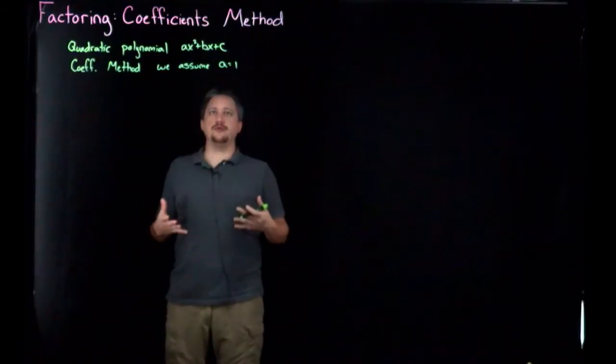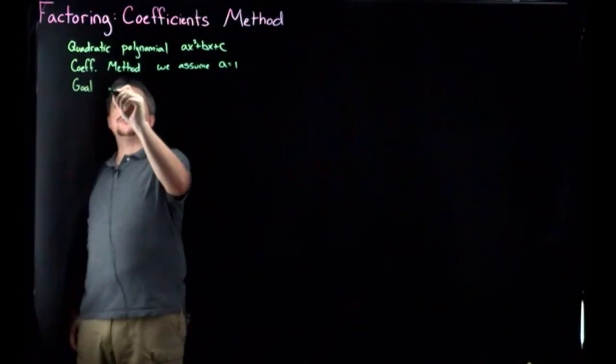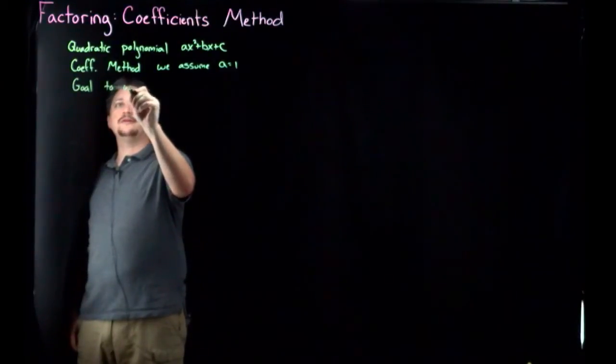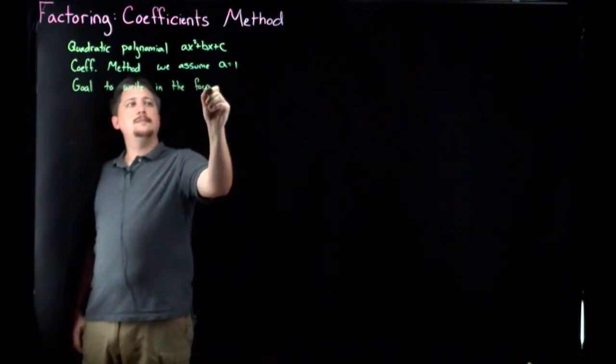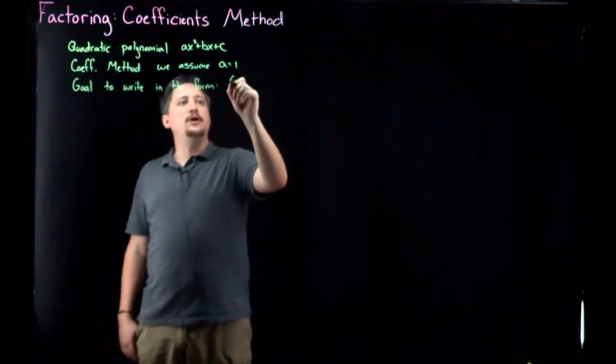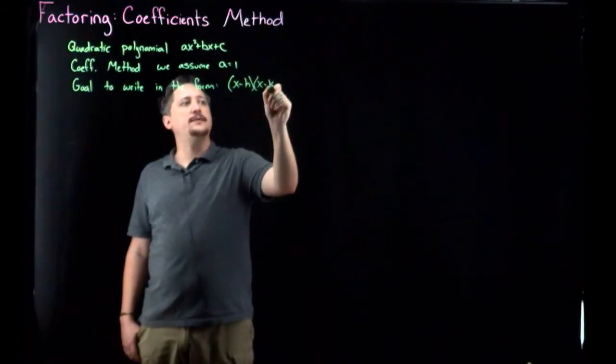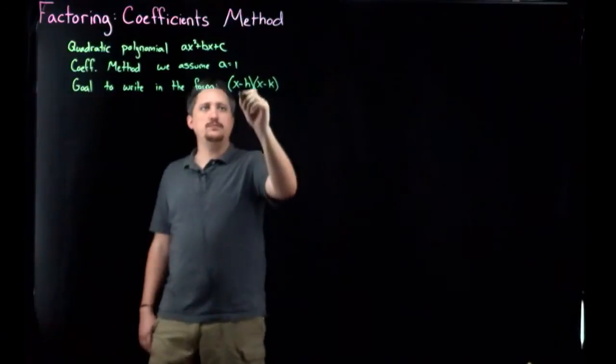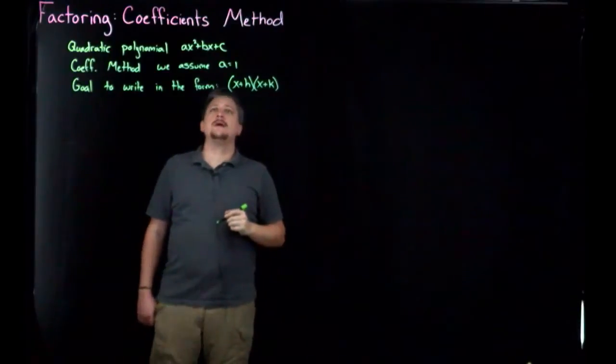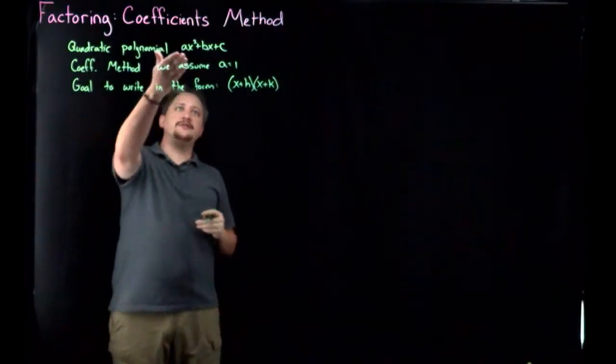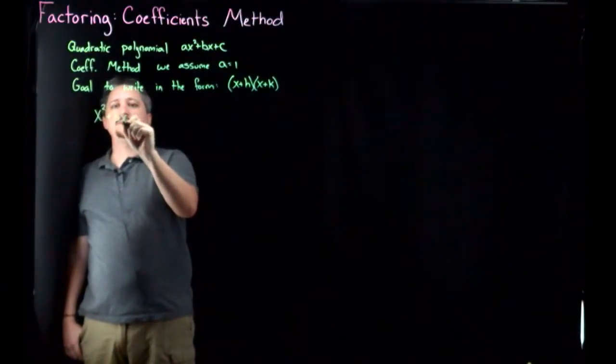So if we have a quadratic whose leading coefficient is 1, our goal then is to write it in the form x plus h and x plus k. Or maybe I'll do plus just so it lines up a little better with the algebra. So we want to rewrite this general thing where a is 1, so we have something that looks like x squared plus bx plus c, right?